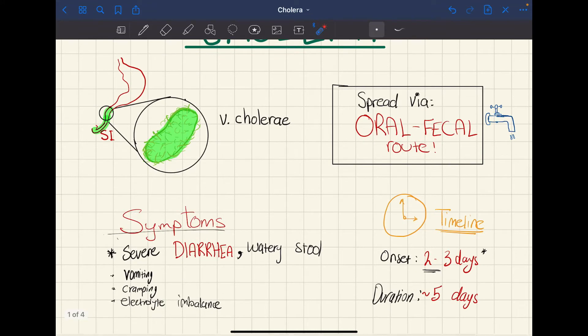This really starts with a bacterial infection of your small intestine. So the bacterium enters your small intestine, colonizes itself right here in the beginning of your small intestine, the duodenum, and it's a bacteria called Vibrio cholerae. Now that causes a lot of issues, most notably severe diarrhea, a lot of water in your stool, but it can also cause vomiting, cramping, and electrolyte imbalance.